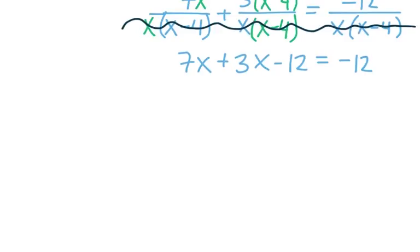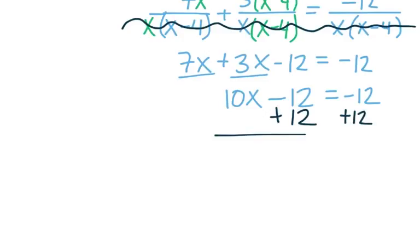Okay, so I'll collect my like terms. Looks like we have just a 10x, and we're going to add 12 to the other side. So just doing some nice linear equation work here. At this point, we find that 10x is equal to 0.